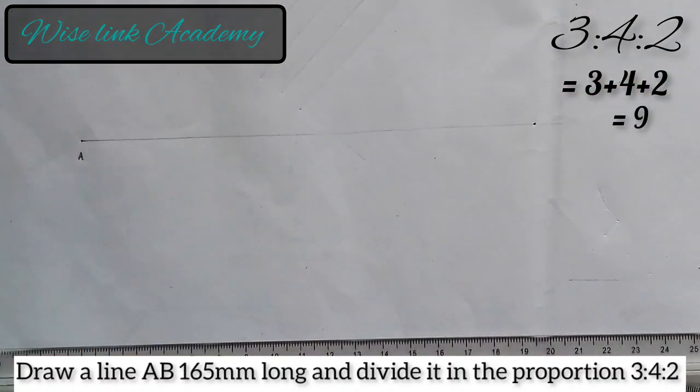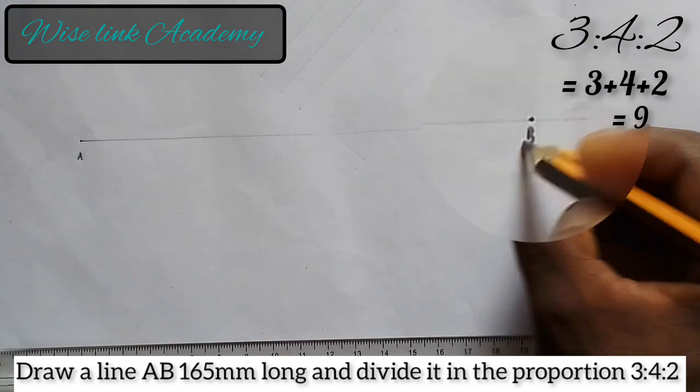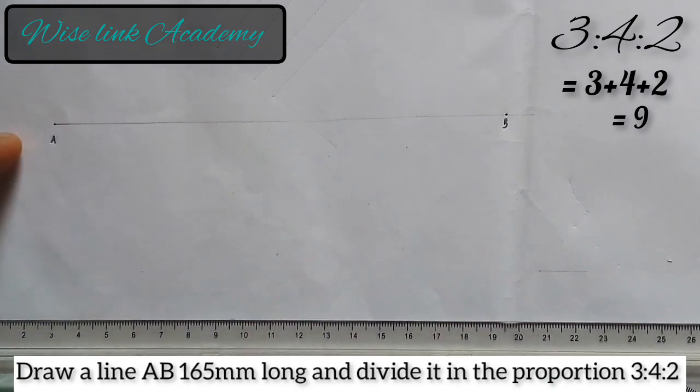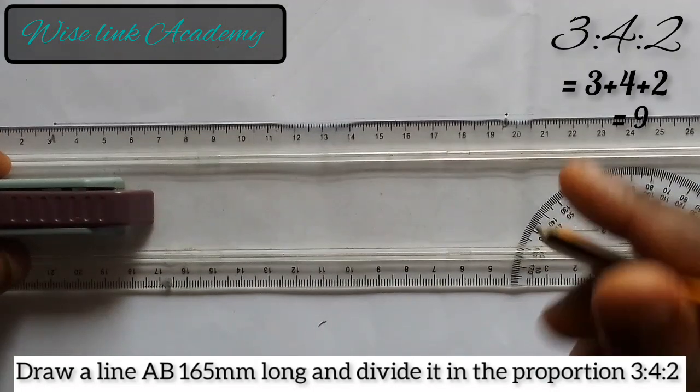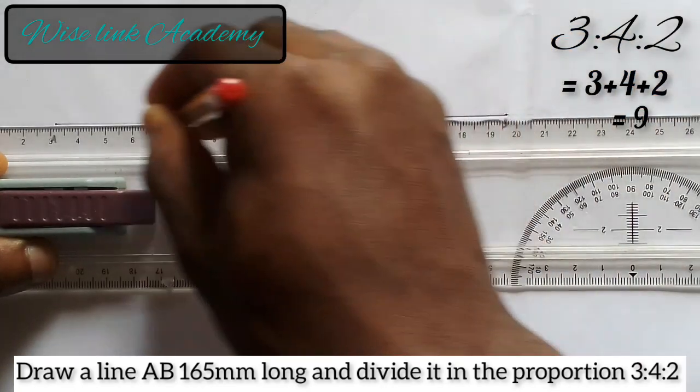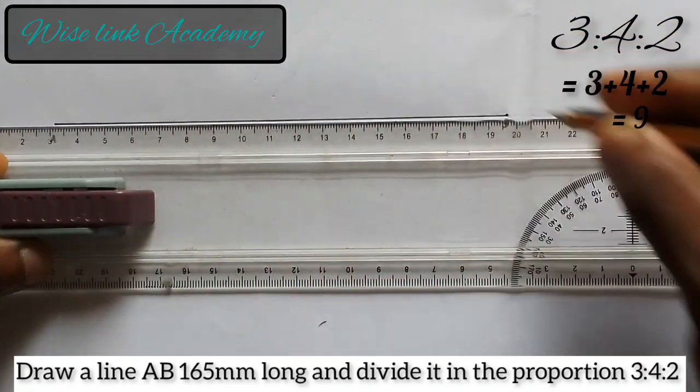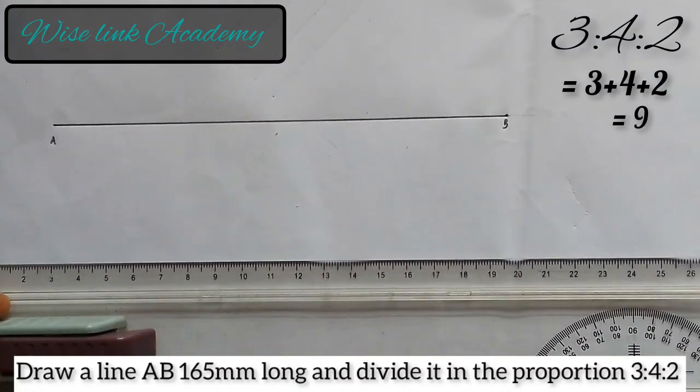So it is given to be B. I will be taking that point together. I will take this line. Therefore, with my T square, I will take this to this point A. So the question said, draw a line AB of 165 millimeter long. This is it here.